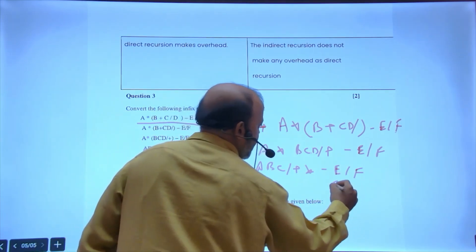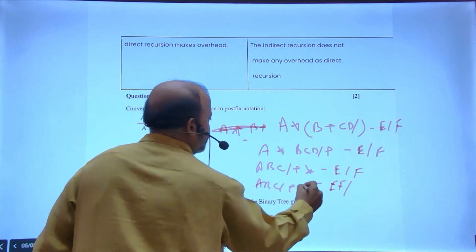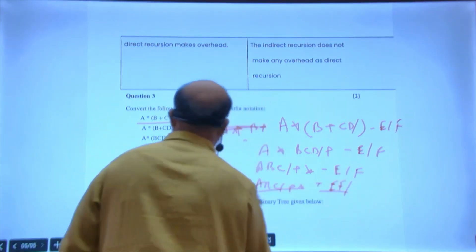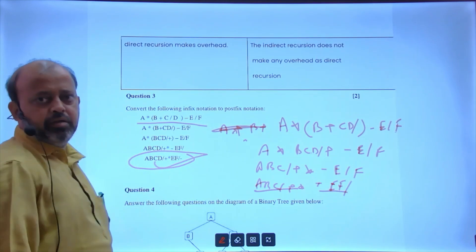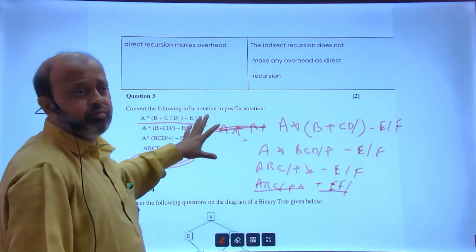Now after this you have multiply and divide, so multiply and divide both have same precedence, whichever comes first. It is matching minus e slash f. And after this line, e f slash - and finally this minus will come at the end, so this will be your answer.